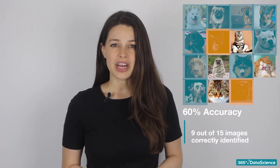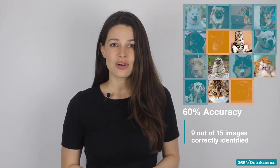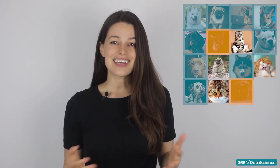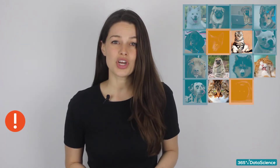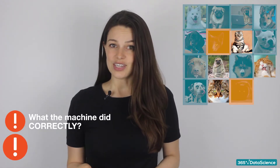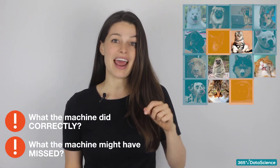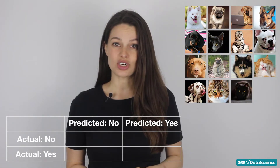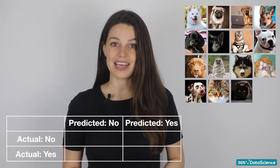For machine learning, however, accuracy is not relied on. Why? Because it doesn't tell you enough. For AI models, it's just as important to know what the machine did correctly as what the machine might have missed. This is where the confusion matrix comes in.